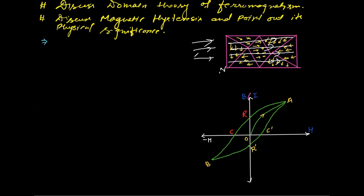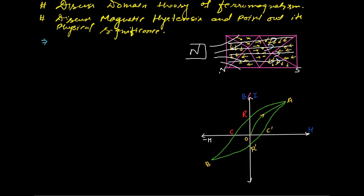Ferromagnetic materials have very high susceptibility, meaning they are very easily influenced by a magnetizing field. The susceptibility value is in the order of 1000 or 10,000 or even more — in the order of a few thousands. The permeability and susceptibility are correspondingly very high. This is the idea about the domain theory of ferromagnetism.